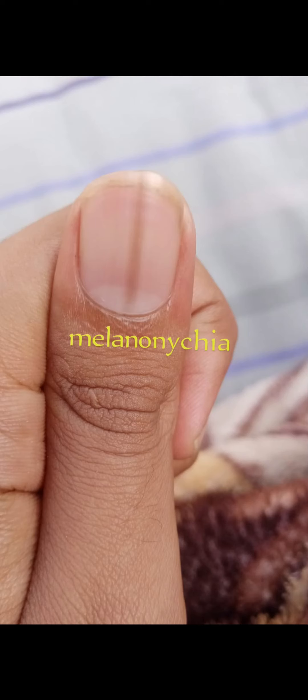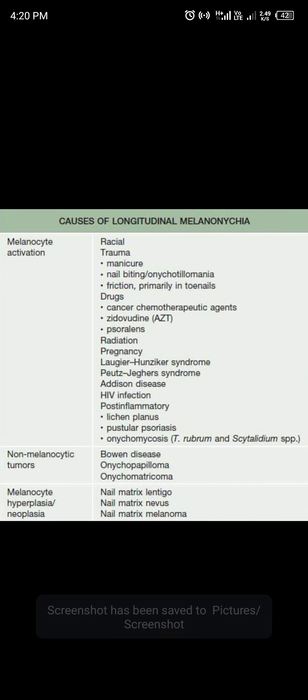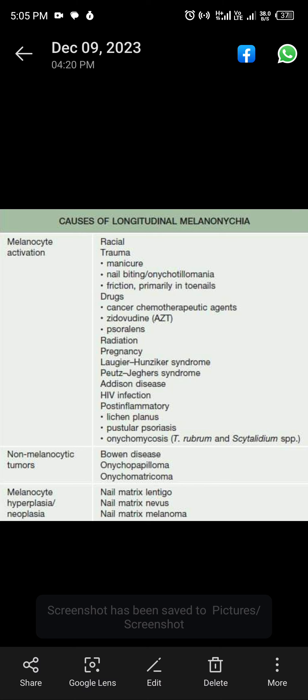Melanonychia is vertical dark brown pigmentation on the nail. There are many causes of melanonychia. First, there is melanocyte activation, which could be due to racial causes, trauma, drugs, or cancer chemotherapy agents such as Psoralen.